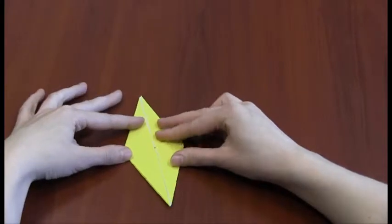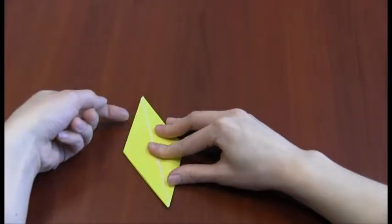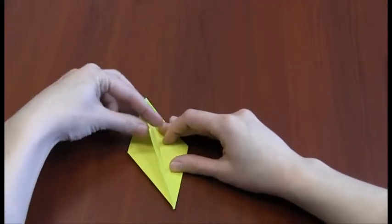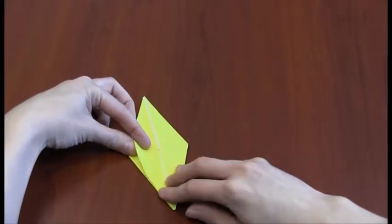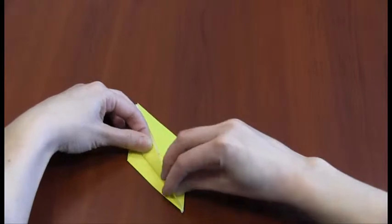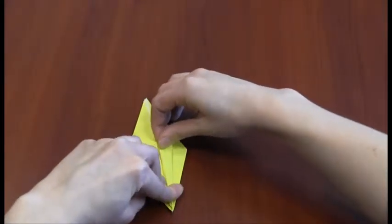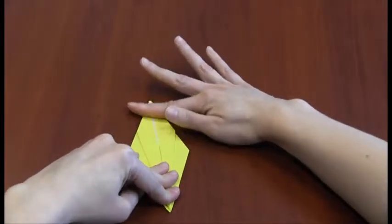That part was kind of tricky, but luckily there are a few easy steps now. Take the left and right corners of the top layer of your skinny diamond and fold them inward at a slight upward angle. Again, just like a paper airplane. You want the bottom left and right sides of the diamond to end up resting against the center line.